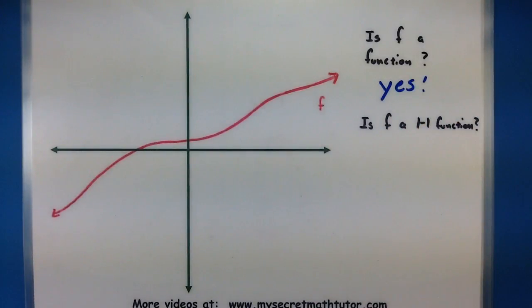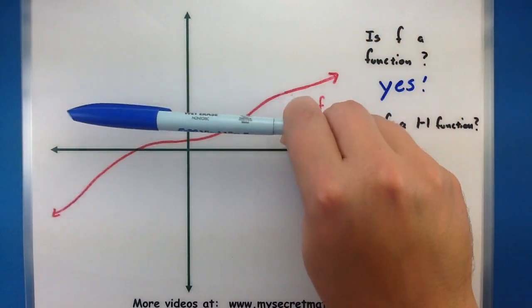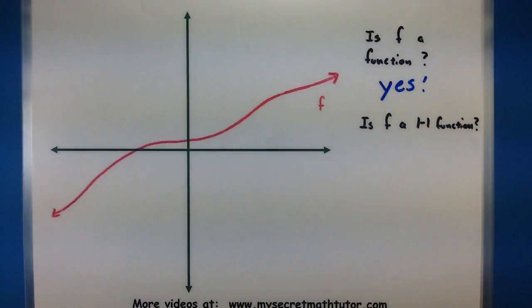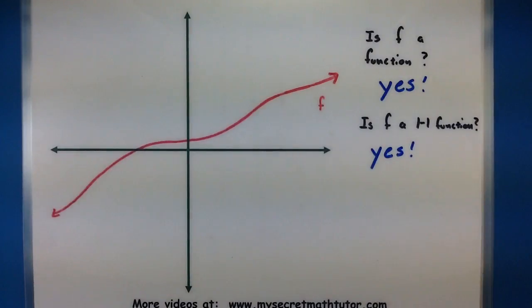Now let's see if it is one to one. So now we're using the horizontal line test. Let's see if it ever crosses in more than one spot. Looks like that is not the case. So we can say yes this is a one to one function.